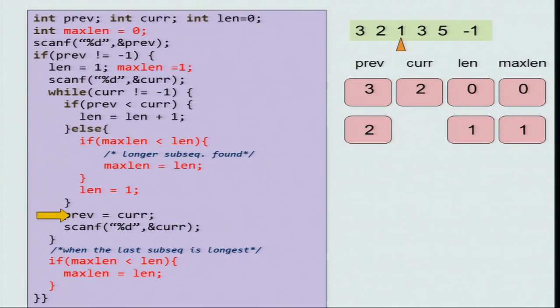Now, you continue the loop with previous becoming current. So, previous is now 2 and current you read the next number which is 1. So, previous and current have both moved one step. So, current is not minus 1. Previous less than current is again false because 2 is greater than 1. So, you enter the else part of the else part. Max length and length there is no change. So, you reset the length to 1.